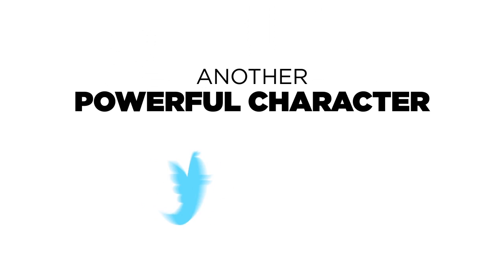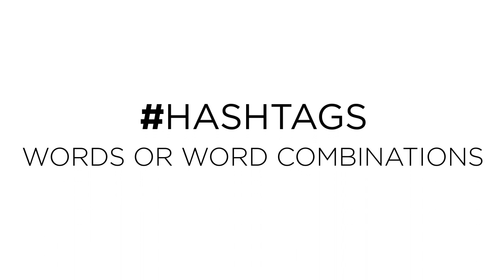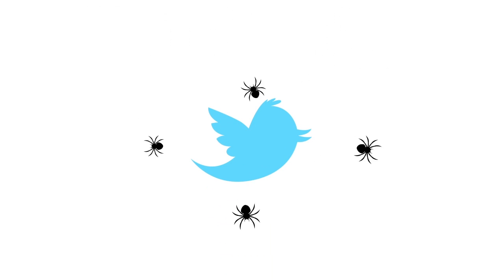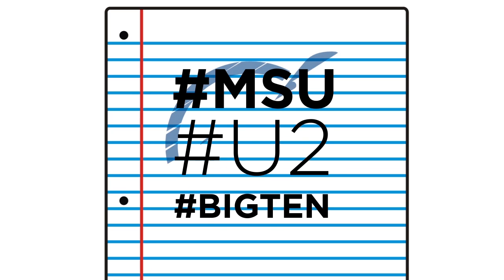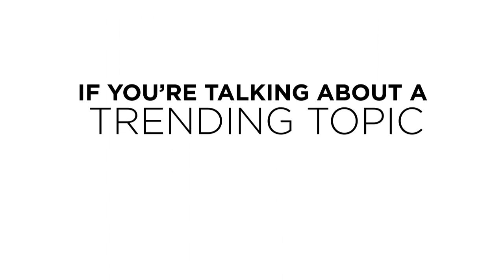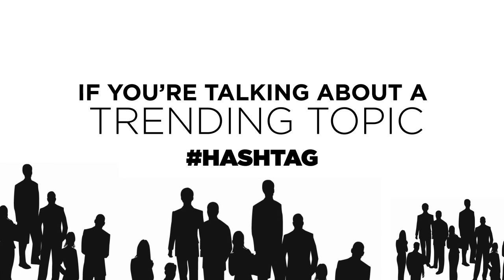Another powerful character in the Twitter lexicon is the pound sign. This symbol precedes what are called hashtags — words or word combinations that Twitter spiders look for to track trending topics. A pound sign in front of MSU, pound sign in front of U2, and Big Ten are examples. If you're talking about a trending topic, using a hashtag can get your message seen by a significantly greater audience.